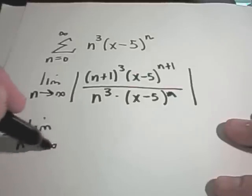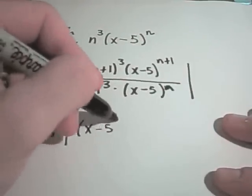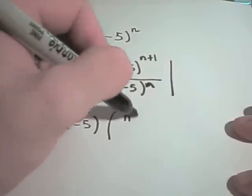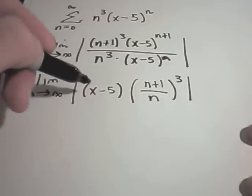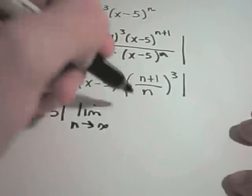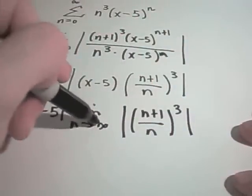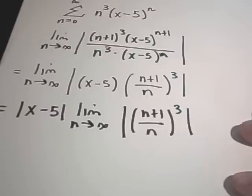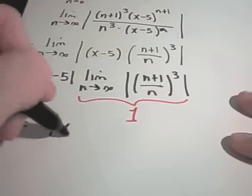Taking the limit as n goes to infinity: I have n plus 1 factors of x minus 5 in the numerator and n in the denominator, leaving one x minus 5 term. I can pull that out front as the absolute value of x minus 5. Then I have the limit as n goes to infinity of n plus 1 over n, all raised to the third power. Since n plus 1 over n goes to 1, we get 1 cubed equals 1. So we're left with the absolute value of x minus 5, and for convergence we need that to be less than 1.